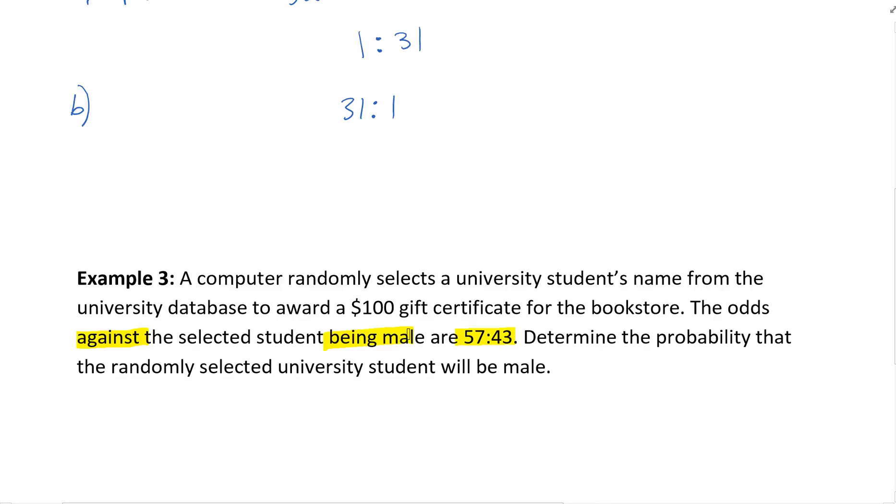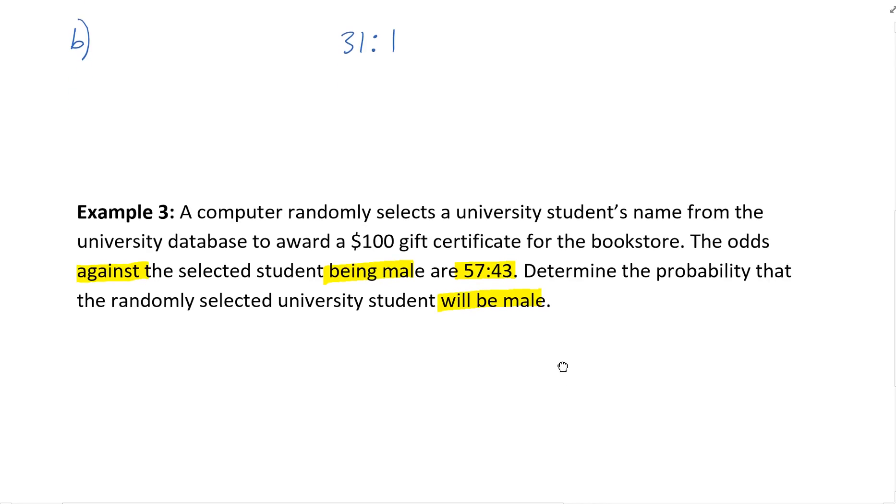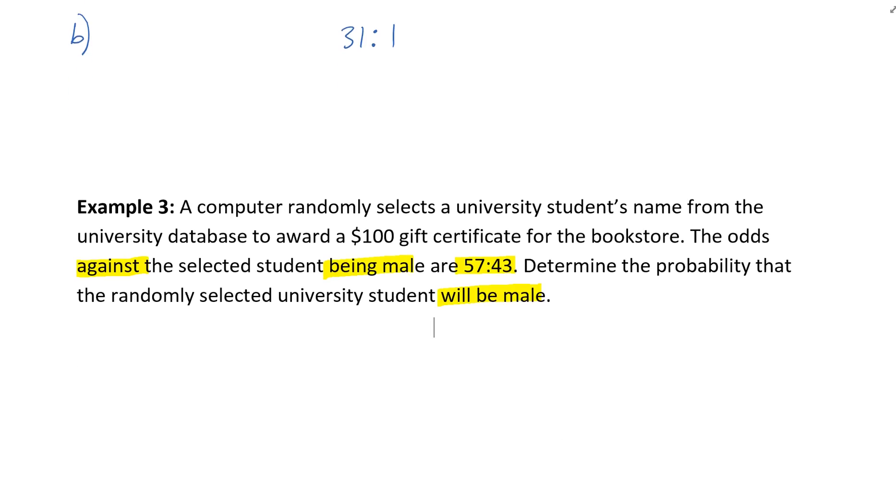Determine the probability that a randomly selected university student will be male. We have 57 to 43, and we want the probability. Whenever I do probability, I need the total number of outcomes.